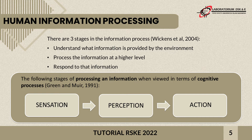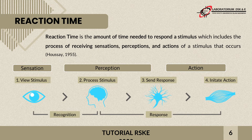Human Information Processing (HIP) has three stages: first, understand what information is provided by the environment; second, process the information at a higher level; and third, respond to this information. The definition of reaction time is the amount of time it takes a person to respond to a stimulus, which includes the process of receiving the sensation, perception, and action of a stimulus.